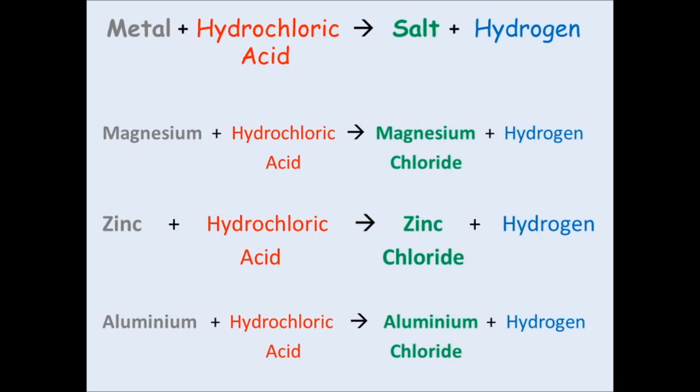Okay, so the second example, zinc plus hydrochloric acid. Because you're using hydrochloric acid, you get a chloride formed. And because you used zinc metal, the salt is zinc chloride. And the third one, when you react aluminum with hydrochloric acid, you get aluminum chloride and then plus hydrogen.